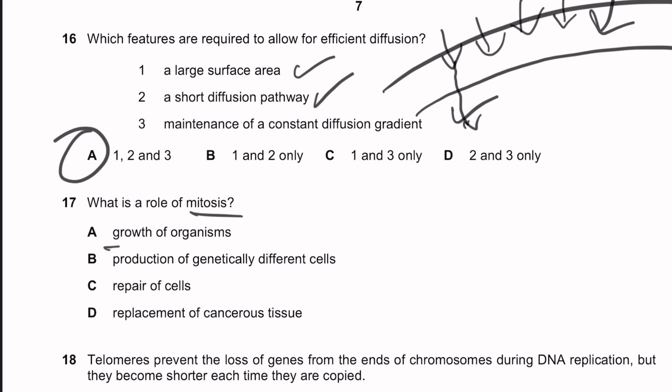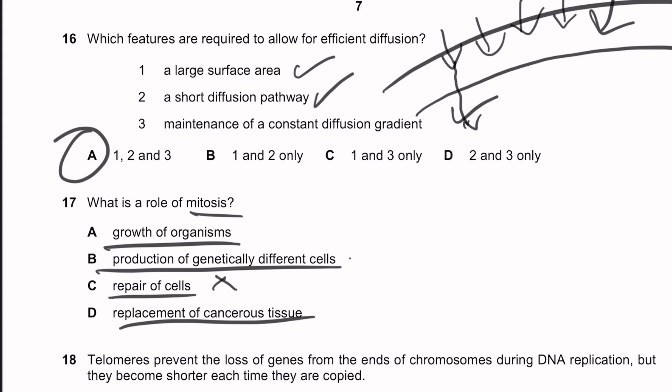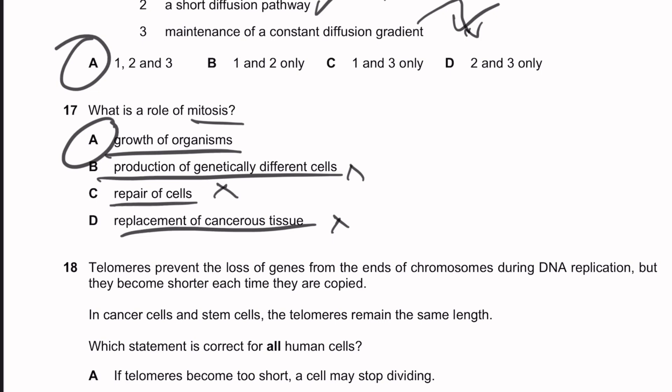Question seventeen: what is the role of mitosis? Options include: growth of organisms (correct), production of genetically different cells (wrong — mitosis produces genetically identical cells), repair of cells (correct), and replacement of cancerous tissue (wrong). Cancerous tissue is not an injured tissue that needs to be replaced by mitosis — it would need to be surgically removed first, and there's no role for mitosis in replacing it. So the roles of mitosis are growth and repair.